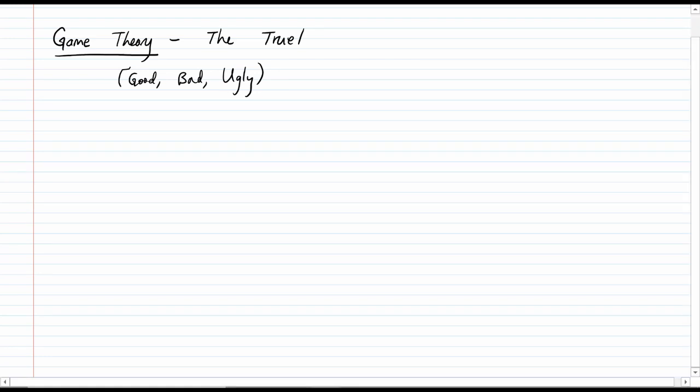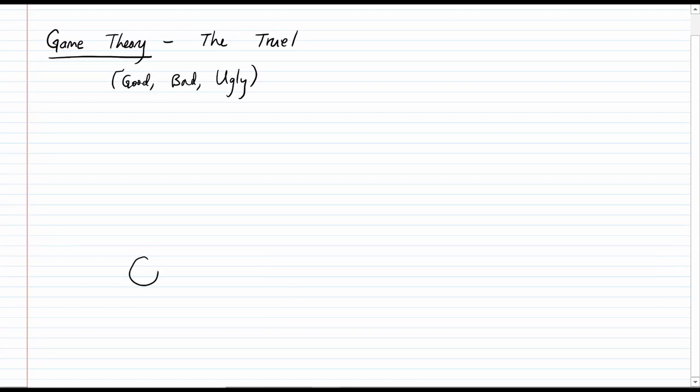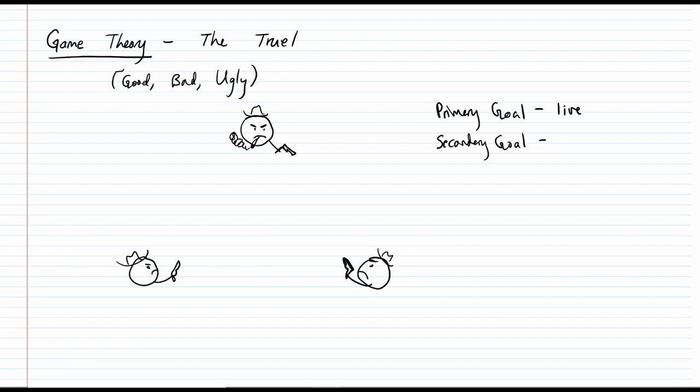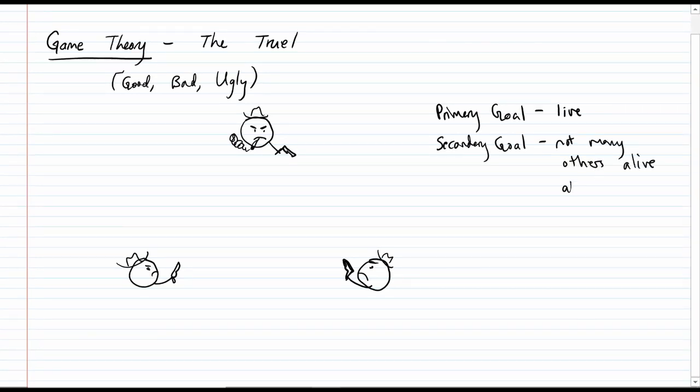So what is this truel that happens at the end? Three people - the good, bad, and ugly - and everyone's trying to kill everyone. How does this game work? Well, they have two goals. Their primary goal is to live. If you die, obviously that's the worst outcome. But there's a secondary goal, and that is to be the only one alive, that there are as few people as possible at the end. They're fighting over this big treasure, and the more people who are dead, the fewer people need to split it.